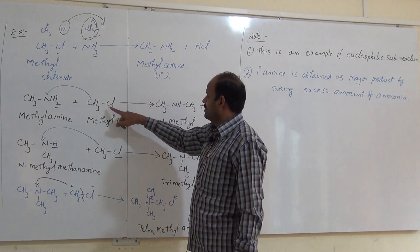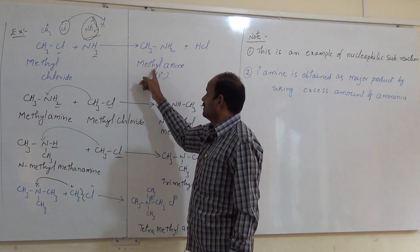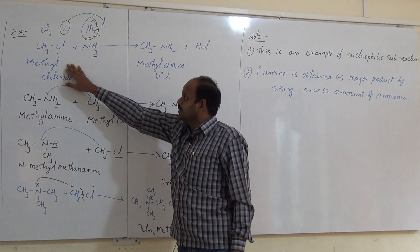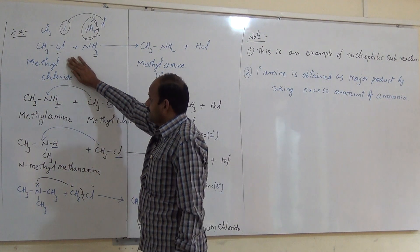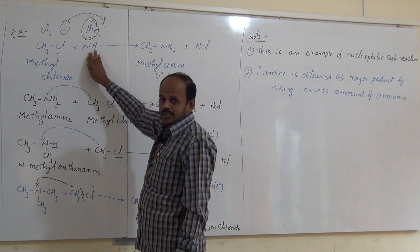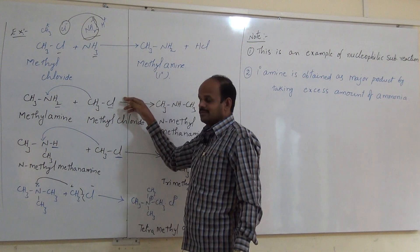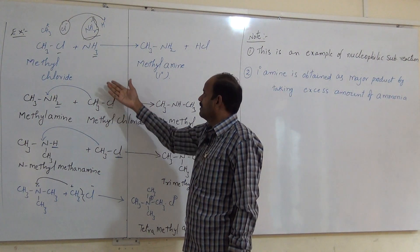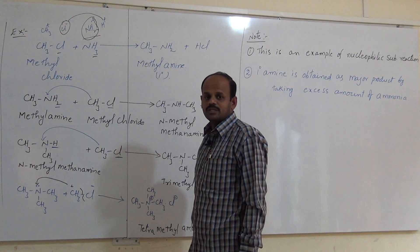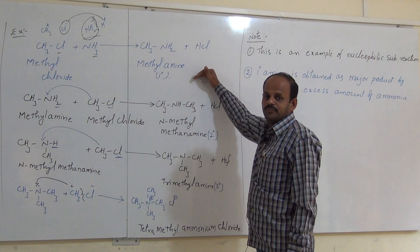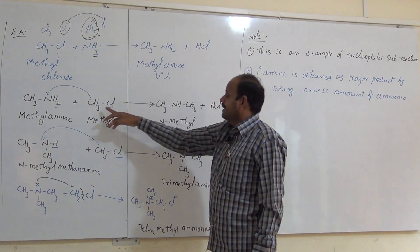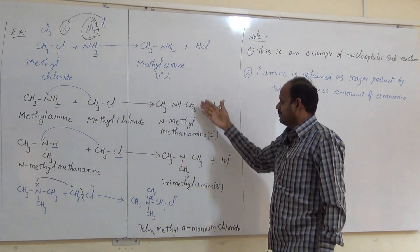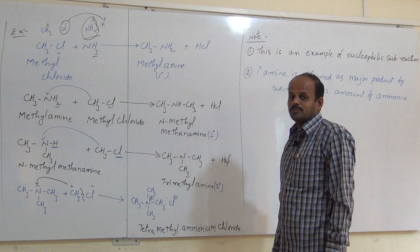The methyl chloride that was taken has completely reacted with ammonia, so there is no methyl chloride left. Thus the next step won't take place and the reaction stops at the primary amine stage. However, if you take excess amount of methyl chloride as well, then further reactions take place, and finally you get a mixture of primary amine, secondary amine, tertiary amine, and quaternary ammonium salt. So if you take excess ammonia with little methyl chloride, methylamine is the major product.